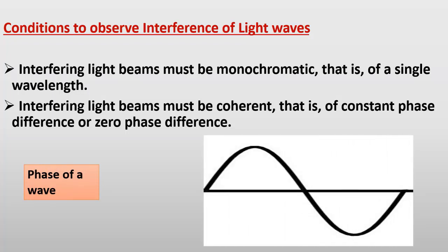Ab hum dekhte hain phase of the wave. Ye hamare paas ek wave hai. Agar hum is wave ki length ko meters ya centimeters mein measure karein, to ye wavelength hogi, jisko lambda se represent karte hain. Phase se murad hai ke hum iske angle show karte hain different points ke upar — jaise yahan pe angle zero hai, is extreme position ke upar angle pi/2 hoga, yahaan pe angle pi hai, aur finally yahaan pe angle 2π hoga. In positions ko in angles ko hum phase of wave kehte hain.